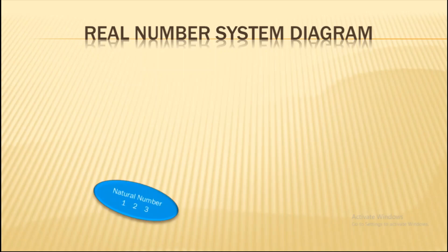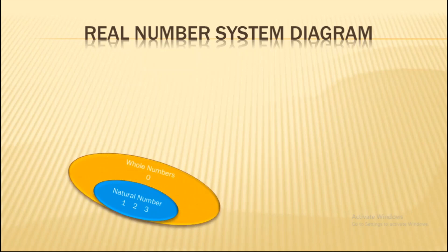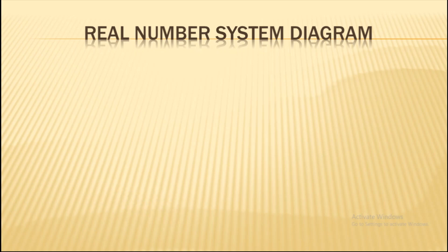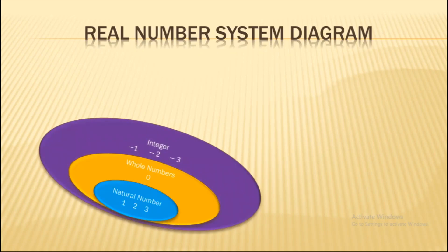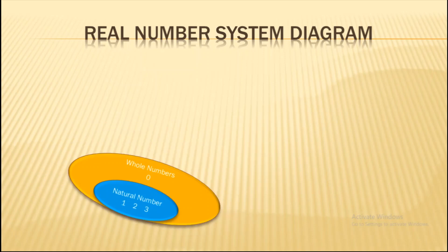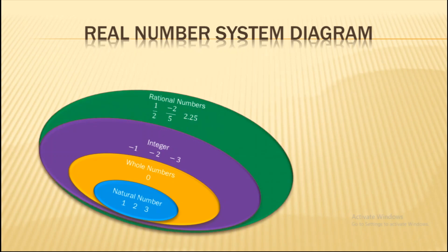The real number system diagram shows how all the numbers we have studied relate to each other. We started with natural numbers — 1, 2, 3, all counting numbers. If we include 0, the set becomes whole numbers. If we further include negative numbers like −1, −2, −3, the set becomes integers.